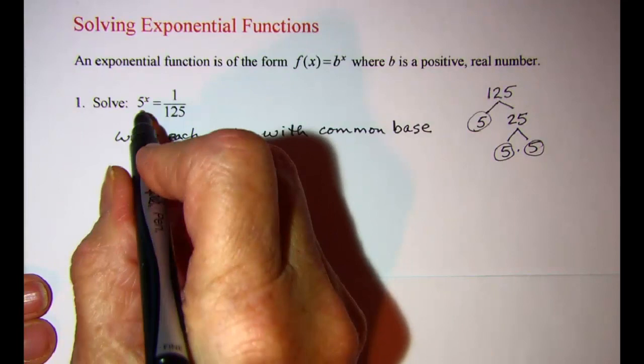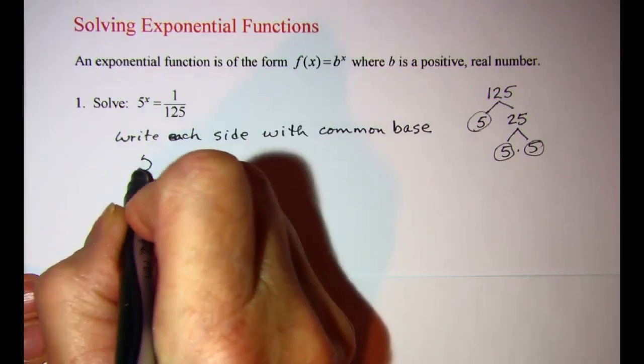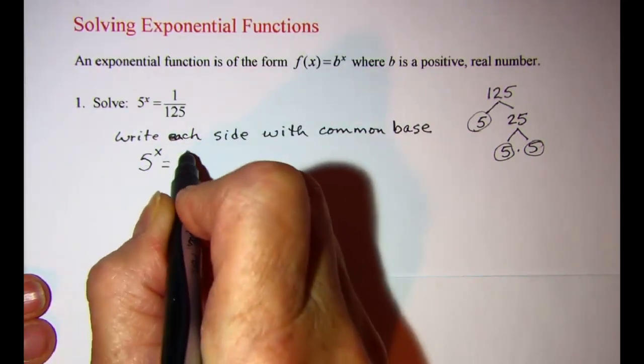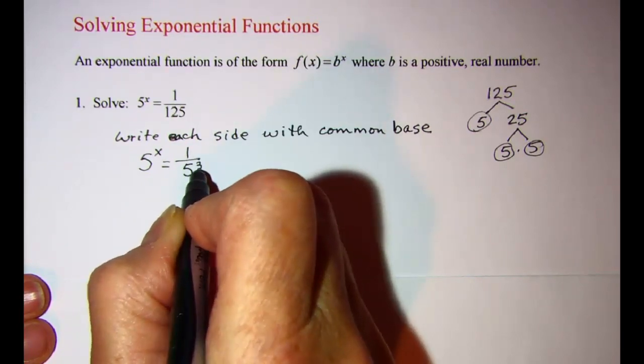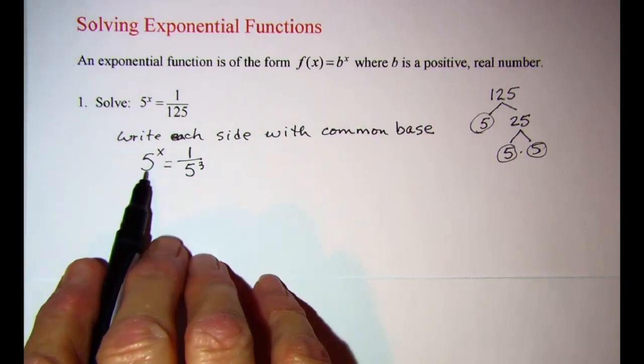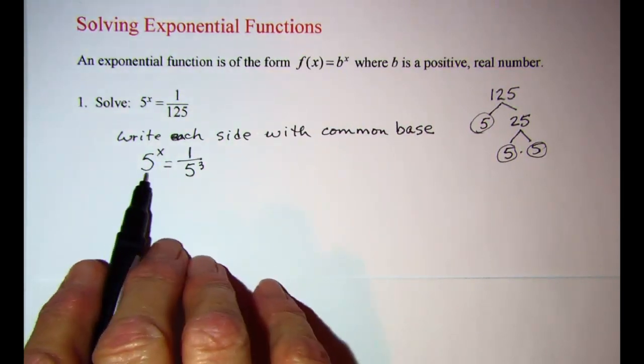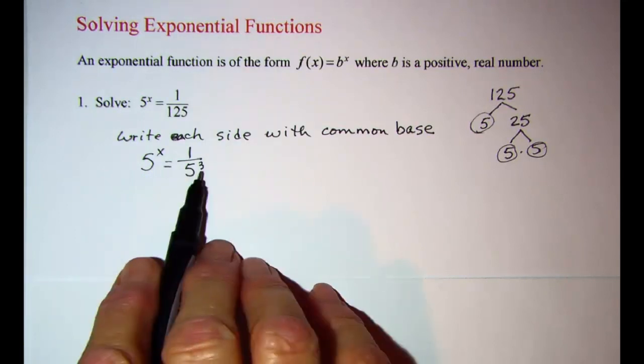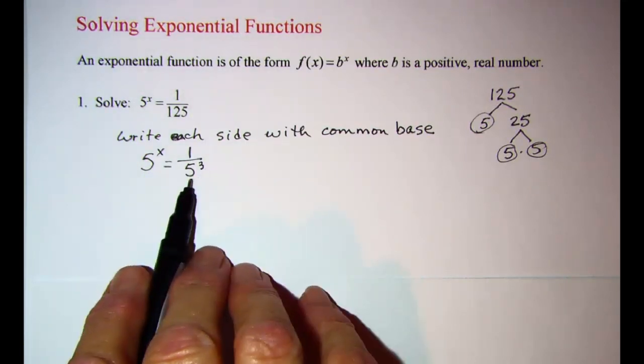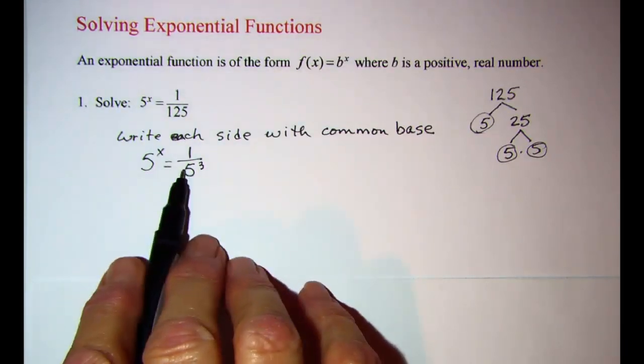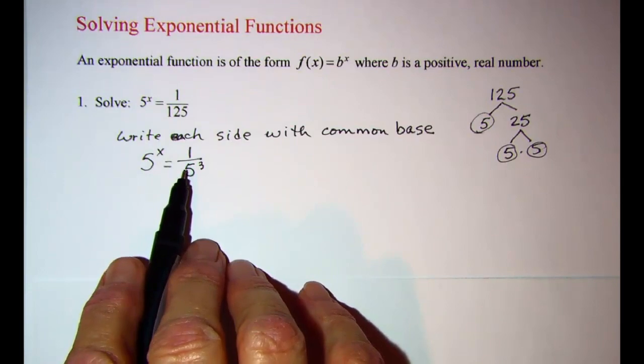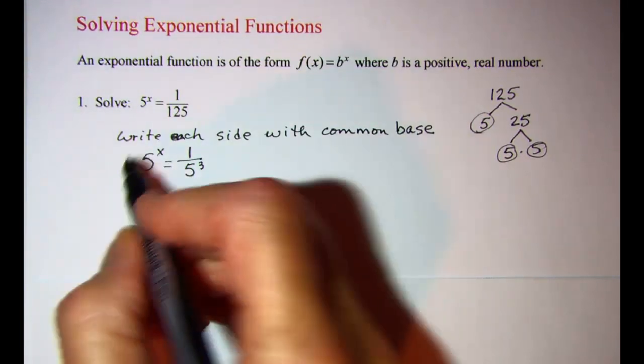I can write this as 5^x = 1/5^3. Since this exponential is in the numerator we could put it over 1, and this exponential is in the denominator. We would like to change that so they're both in the same place of the fraction.